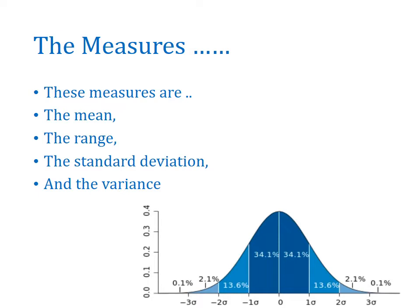When the researcher receives results from these descriptive statistics — mean, range, standard deviation, and variance — the researcher can feel for the data: whether the data is good to proceed to the next stage, or whether there is a need to work on the scales and questionnaires.